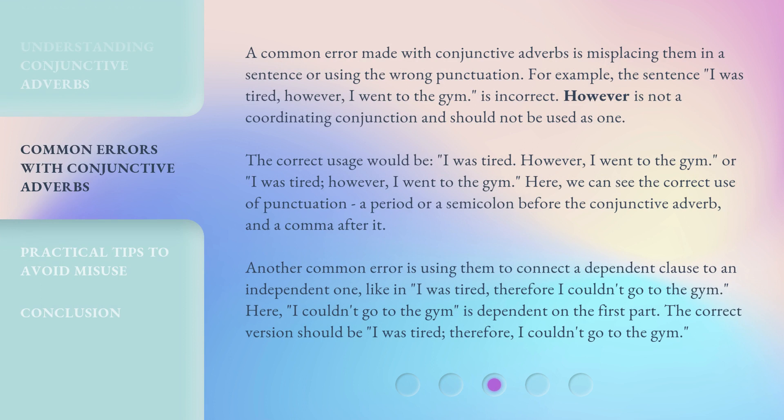A common error made with conjunctive adverbs is misplacing them in a sentence or using the wrong punctuation. For example, the sentence 'I was tired, however, I went to the gym' is incorrect. 'However' is not a coordinating conjunction and should not be used as one. The correct usage would be: 'I was tired. However, I went to the gym,' or 'I was tired; however, I went to the gym.' Here we can see the correct use of punctuation — a period or a semicolon before the conjunctive adverb, and a comma after it.